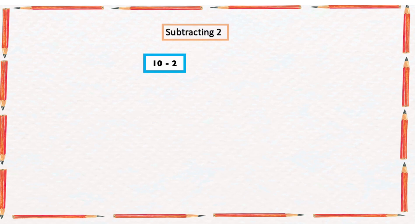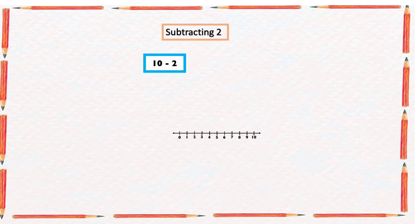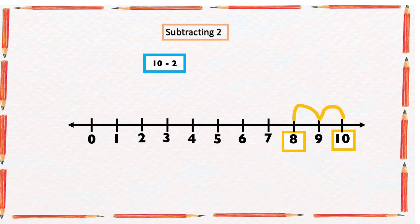We have 10 minus 2. Let's make use of our number line. We have to start from number 10 and count two numbers backward: one, two. The arrow ended at 8, so 10 minus 2 equals 8.